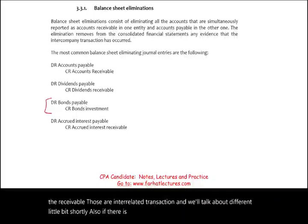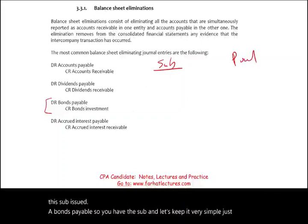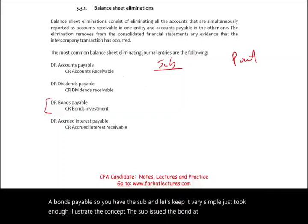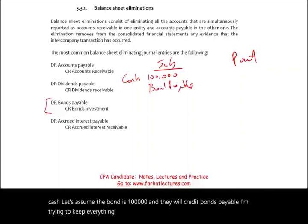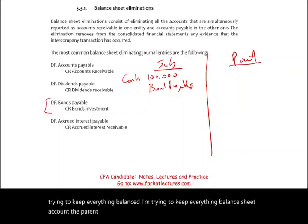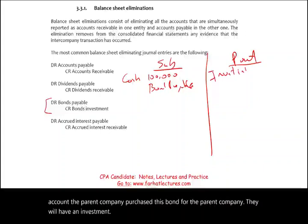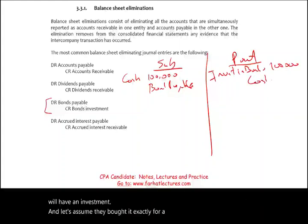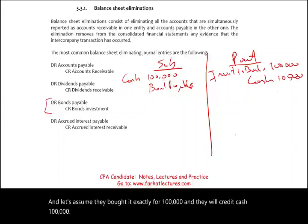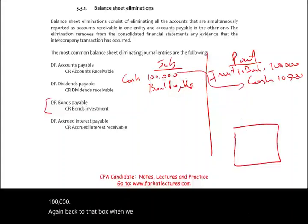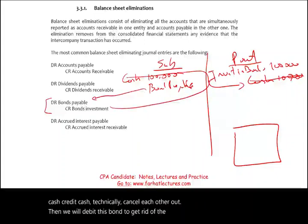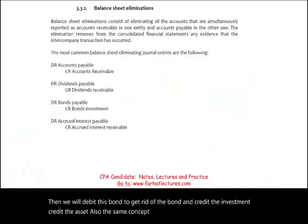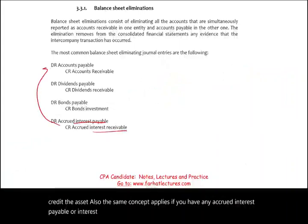Also, if there is an investment in bonds — let's assume the sub issued bonds payable at par for $100,000, debiting cash and crediting bonds payable — and the parent purchased that bond, debiting investment in bonds $100,000 and crediting cash $100,000, then when we consolidate the cash entries cancel each other out. We then debit bonds payable to eliminate the liability and credit investment in bonds to eliminate the asset. The same concept applies to any accrued interest payable or interest receivable — same treatment as the accounts payable and receivable we discussed.